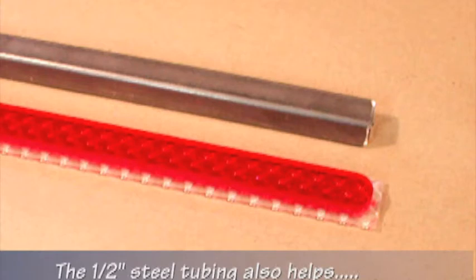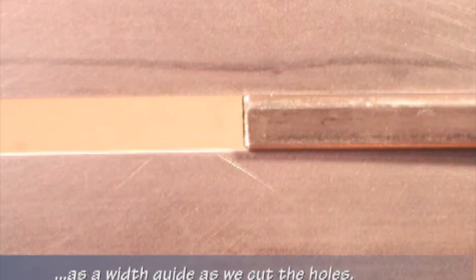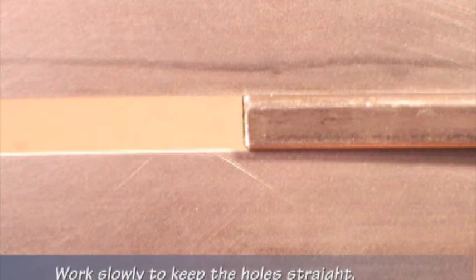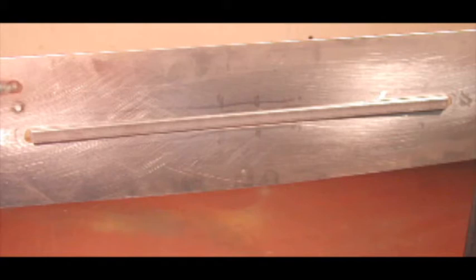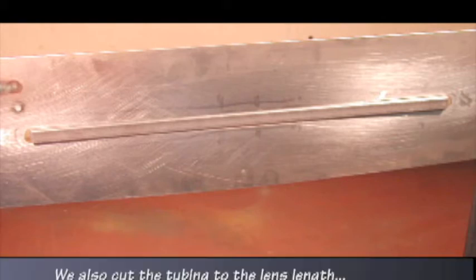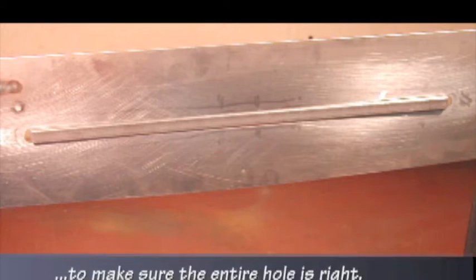The half-inch steel tubing also helps as a width guide as we cut the holes. Work slowly to keep the holes straight. We also cut the tubing to the lens length to make sure the entire hole is right.